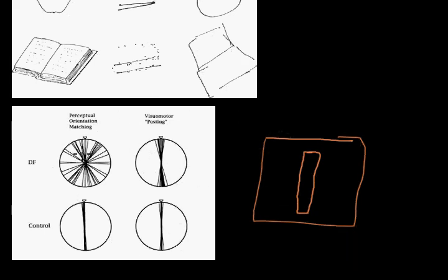In the first case, she was asked to look at the slot on the board and orient an envelope to the same orientation as that slot. So not to post it, not yet, not posting anything yet. Just to look at the slot, then to look at her envelope, look at the slot, look at the envelope, and try and orient them to the same thing.